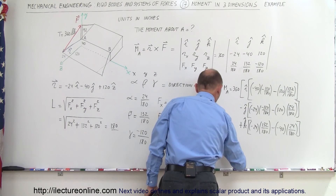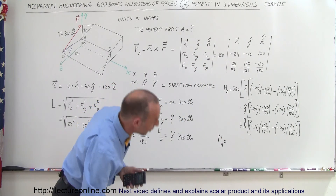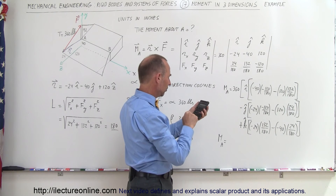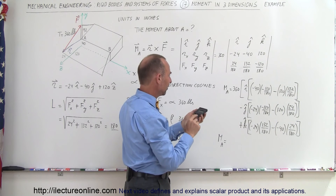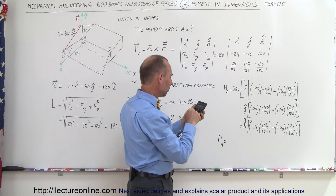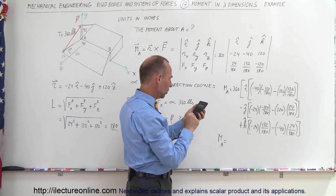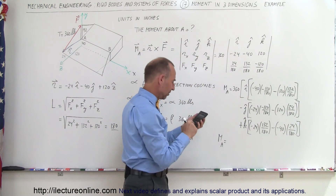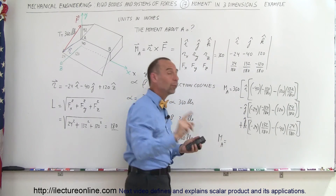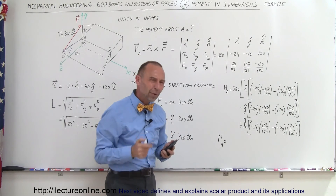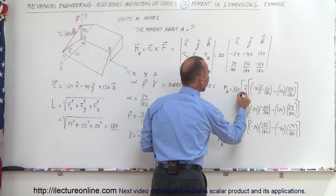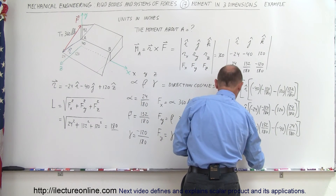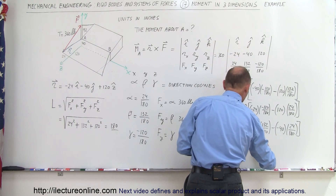For the I component: 40 times 120 divided by 180 is positive, minus 120 times 132 divided by 180. Multiplying by 360 and dividing by 12 to convert from inches to feet gives minus 1840 foot-pounds in the I direction.